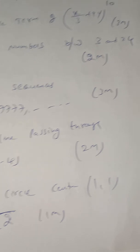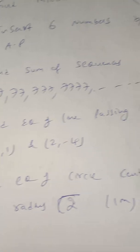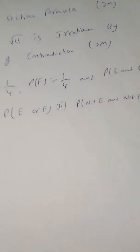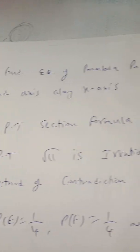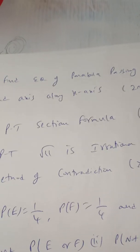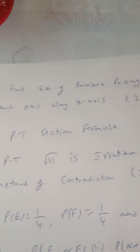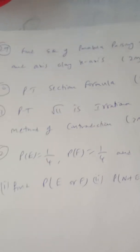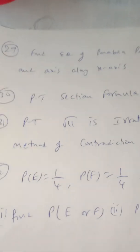Another question: find the equation of circle with center (1, 1) and radius √2. Also, find the equation of a parabola passing through the point (2, 3) with axis along the x-axis. These are important questions from conic sections for the last minute revision.